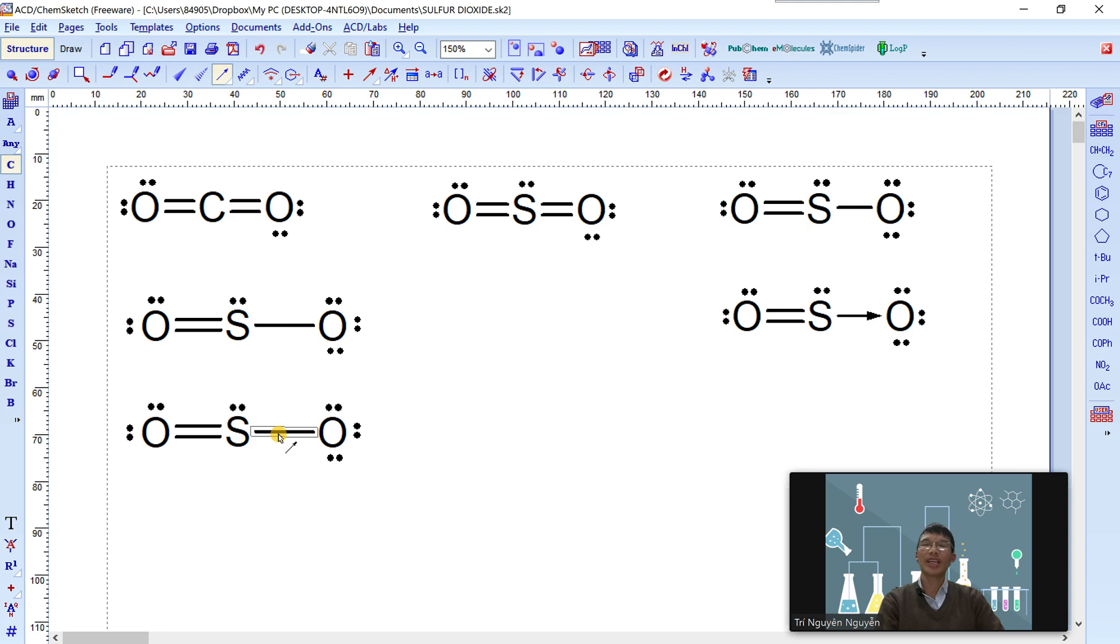Left click on it. Yes, now we can see a single bond. Yes, use the keyboard to adjust it. Yes, we have finished drawing the last Lewis dot structure of sulfur dioxide.